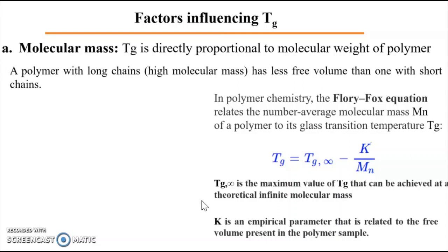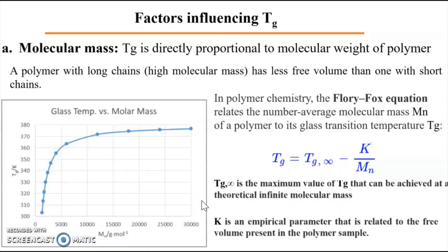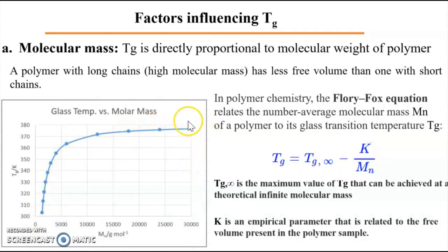K is a parameter related to the free volume present in the polymer sample. For each polymer, we have to determine Tg-infinity, which is obtained by varying Tg as a function of the molecular mass of the polymers. Tg increases by increasing the molecular mass of the polymers until reaching a plateau, and here we can determine the Tg-infinity. After this mass, all other polymers with higher molecular mass will have the same Tg-infinity.